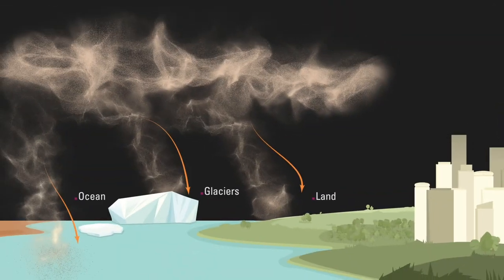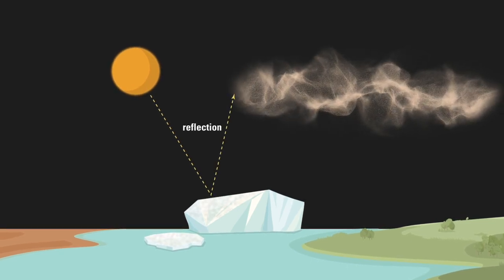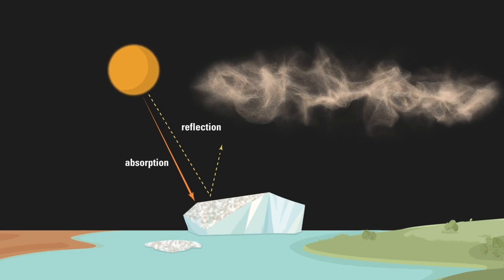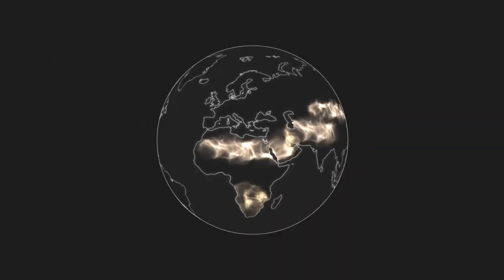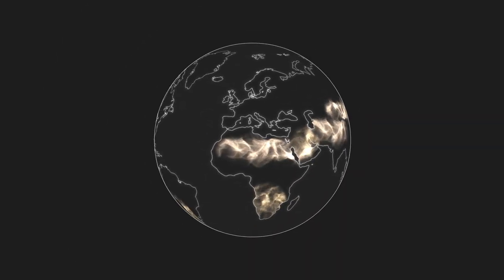Finally, dust deposited on glaciers lowers the amount of solar radiation they can reflect, which speeds up their melting. It is clear that dust has an impact on the environment and the entire Earth system.